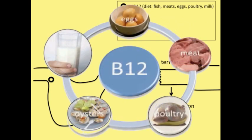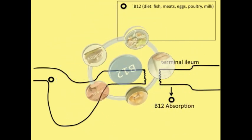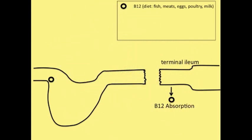B12 comes from the diet. The foods that are high in B12 include fish, meats, eggs, poultry, and milk. So as you can see, this can be a problem for vegans. I'm not really sure where they get their vitamin B12, but it's not from any of these sources.